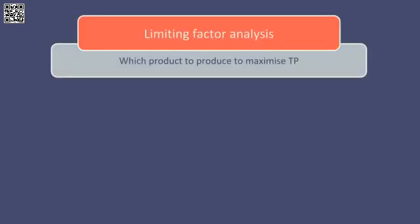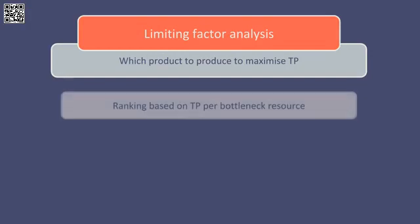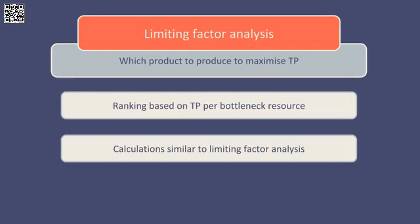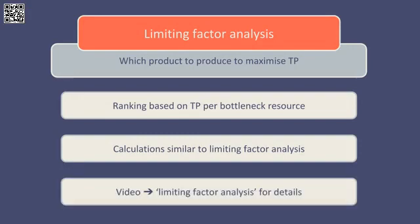Once we know what the constraint or bottleneck is, we can use limiting factor analysis to determine which product or products should be produced to maximise throughput. The calculations are performed in much the same way as for regular limiting factor analysis, but rather than ranking the products based on contribution per limiting factor, we will now rank them based on throughput per bottleneck resource. The product with the highest throughput per bottleneck resource should be produced first, followed by the next best, and so on until the bottleneck has been utilised in full. For more information on limiting factor analysis, please see the video covering this topic. There are also some numerical examples within an article on throughput accounting on the ACCA website that help support this video.